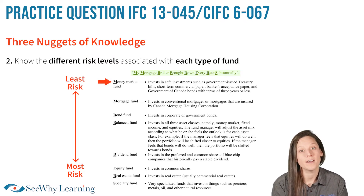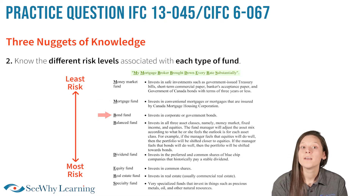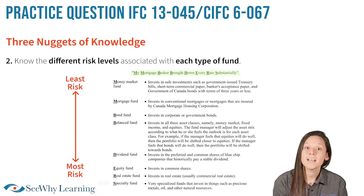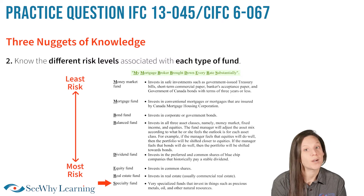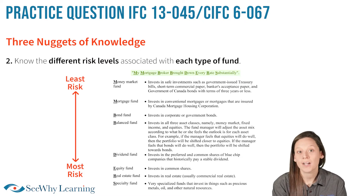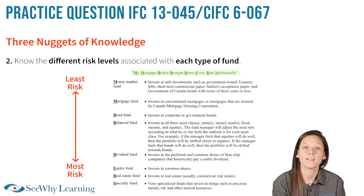M for money market fund, M for mortgage fund, B for bond fund, B for balanced fund, D for dividend fund, E for equity fund, R for real estate fund, and S for specialty funds, such as precious metals funds. Keep in mind that this is only a generalization, so when dealing with actual clients and investments, make sure you consult the fund's disclosure documents for the complete picture and to properly assess the risk associated with the investment.